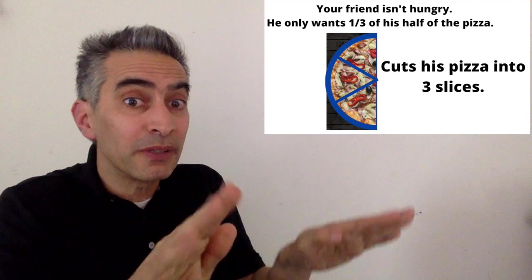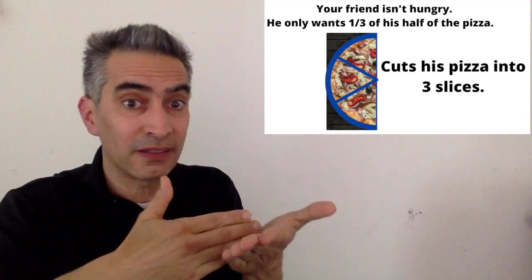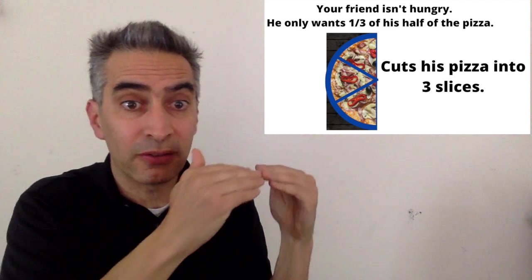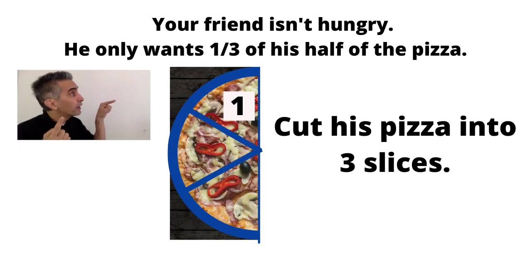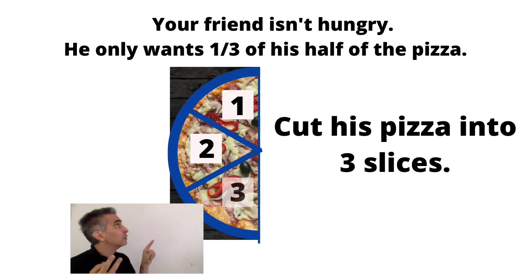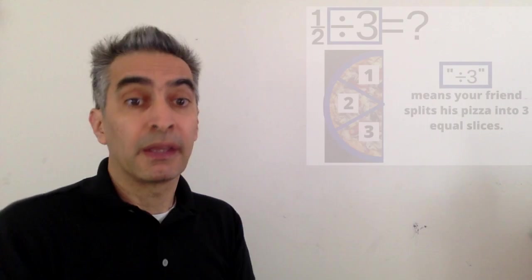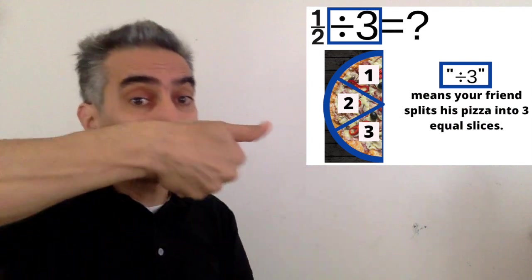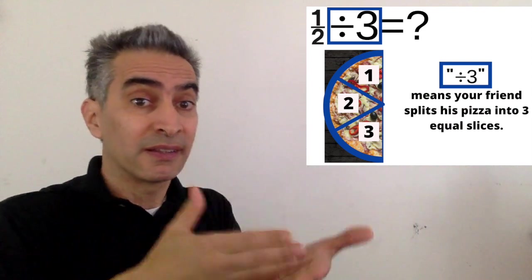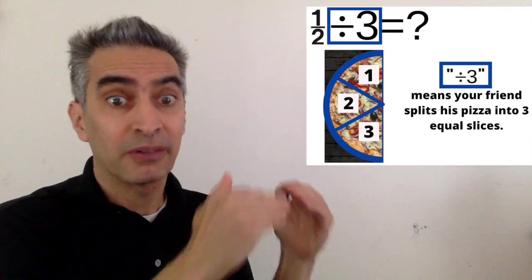So what does your friend do? He takes his pizza and he splits it into three equally sized pieces. One, two, three. Dividing by three means separating the pizza into three slices that are all the same size.